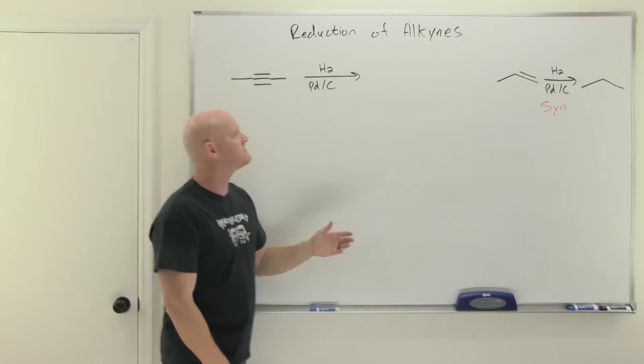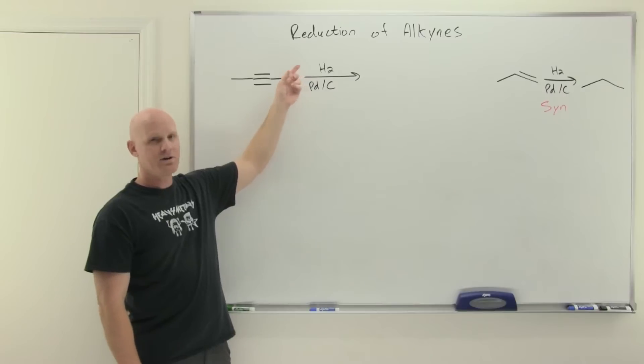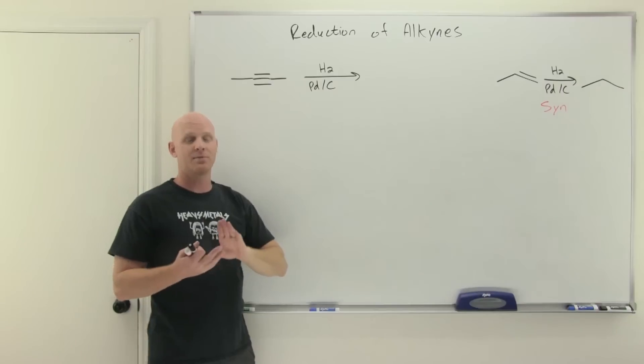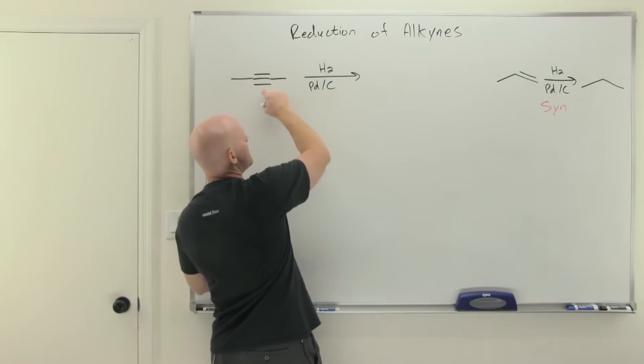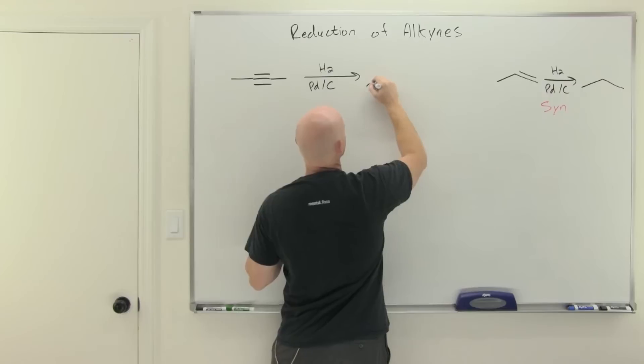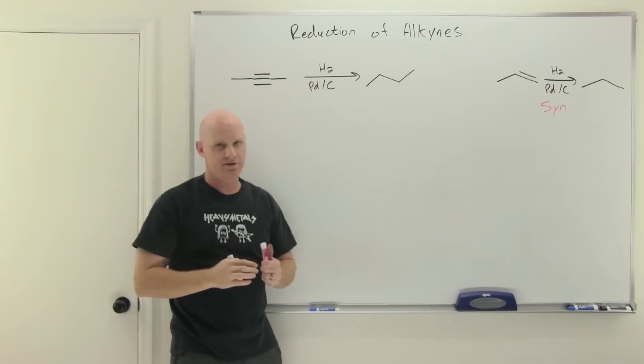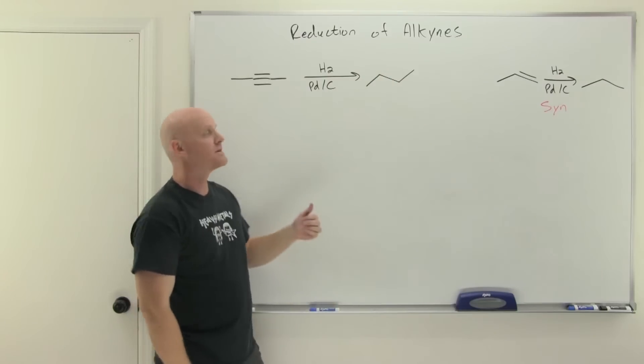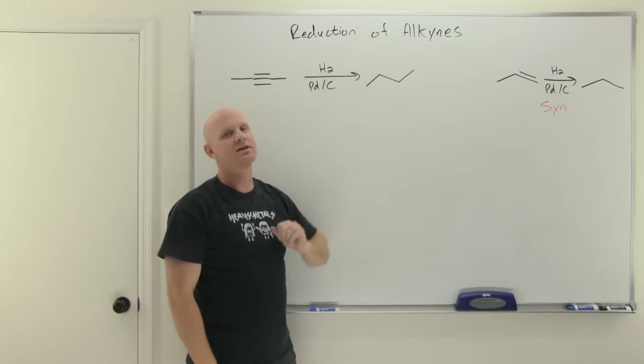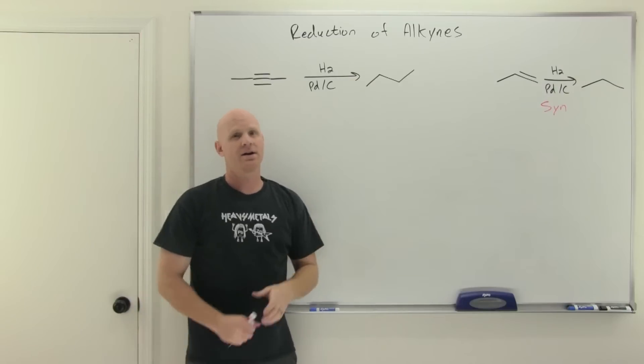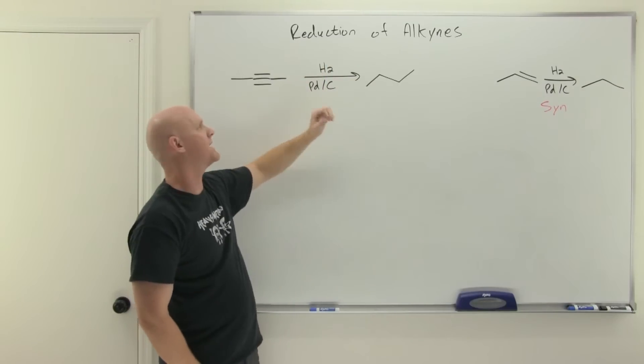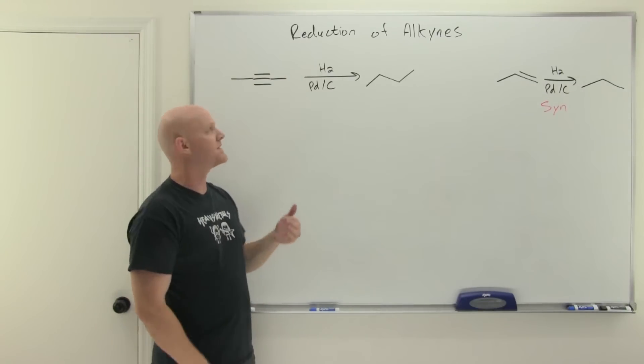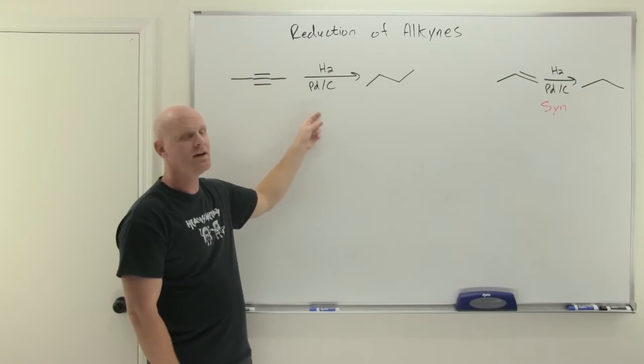The analogous reaction for alkynes uses the same exact reagents—H2 and an appropriate metal catalyst like again palladium, platinum, or nickel. The key difference here is that now we have two pi bonds and the reaction occurs twice. You actually add two equivalents of H2, so add hydrogen across the alkyne twice. The first converts it into an alkene and then the alkene turns into the alkane. It turns out you can't really stop this halfway by limiting how much hydrogen you add or something like that.